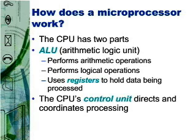A specification such as 3.6 gigahertz means that the microprocessor's clock operates at a speed of 3.6 billion cycles per second. All other things being equal, a computer with a 2.8 gigahertz processor is faster than a computer with a 1.5 gigahertz processor or even a 933 megahertz processor.